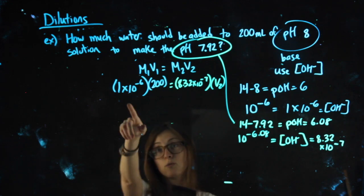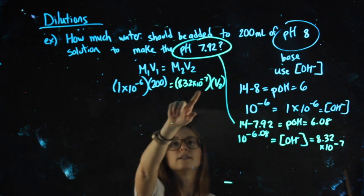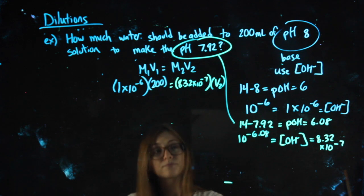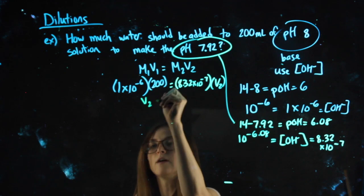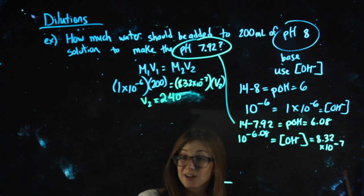So solving for V2, 1 times 10 to the negative 6 times that 200, divide by the 8.32 times 10 to the negative 7. For my V2, I get 240 something like that. That's not my answer.